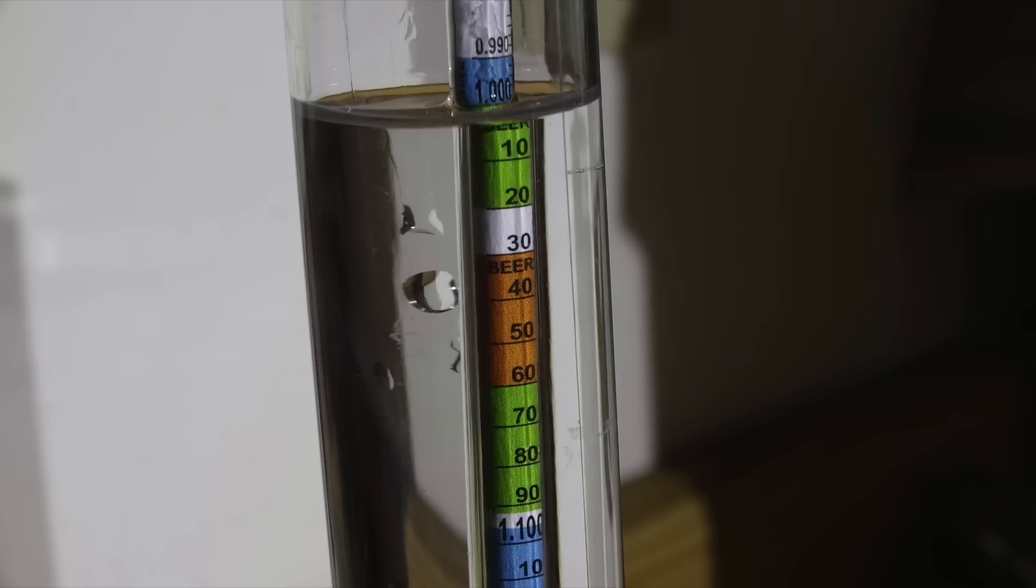It's going to come up with a number that is higher than 1.0 because there's sugar in it, there's hops in it, there's all sorts of things. Those are going to increase the specific gravity of the water, so it's going to be higher.